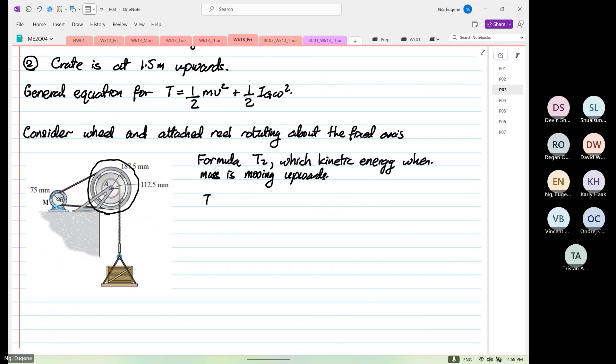So given to us, the mass of the wheel and the attached reel is 25 kilogram. And then the K squared is equal to 0.15 squared. So this will be equal to 25 times 0.5625 kilogram meter squared.